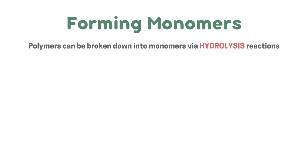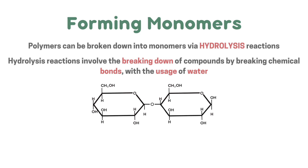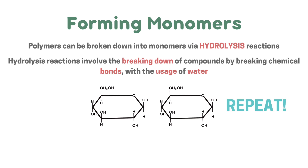Polymers can be broken down into monomers via hydrolysis reactions. Hydrolysis reactions involve the breaking down of compounds by breaking chemical bonds with the use of water. For example, two glucose molecules joined together — representing part of a polymer — can be broken apart using water, and this process repeats to break down the whole polymer.